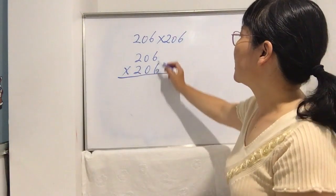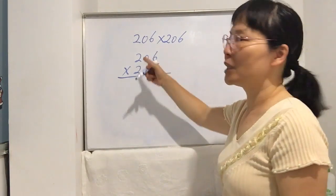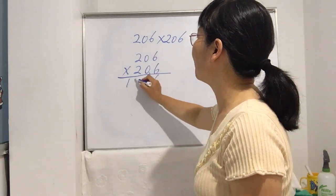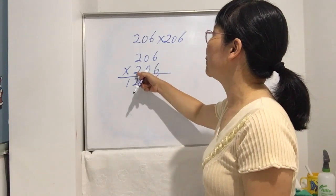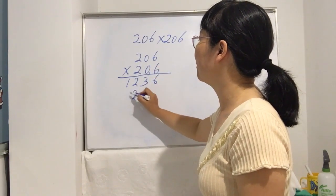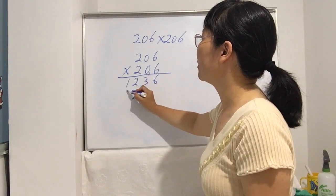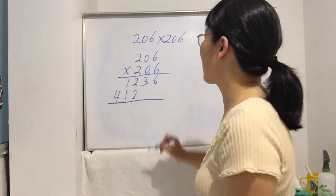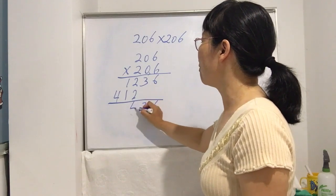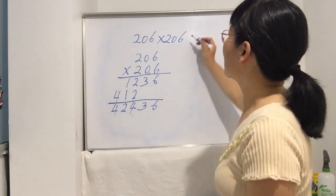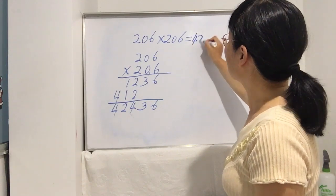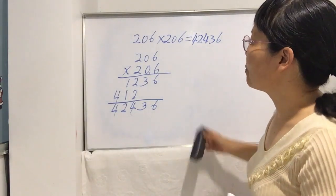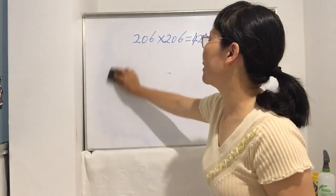The normal way: six times six is thirty-six, carry three. Six times zero is zero, plus three is three. Six times two is twelve. Then two times six is twelve, two times zero is zero plus one is one, two times two is four. So the answer is 42,436.